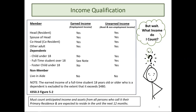We need to count all anticipated income and income from assets for those who will call this their primary residence and are expected to live in the unit for the next 12 months. There may be some adults who are temporarily away but consider this their full-time residence. We need to count their income as well since this is their primary residence.